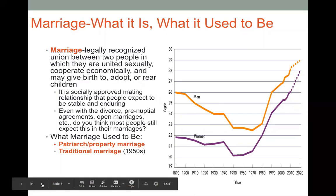Because these norms are socially constructed, their meaning, values, and what they symbolize are changeable and in flux as well. Before discussing the different changes, we'll cover changes related to sexual intimacy, courtship and dating, and marriage. Marriage is the legally recognized union between two people in which they are united sexually, cooperate economically, and may give birth to, adopt, or rear children. It is the socially approved mating relationship, and one that people expect to be stable and enduring.